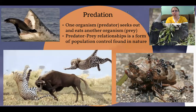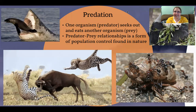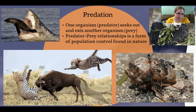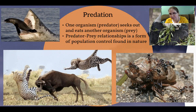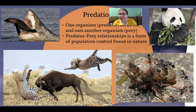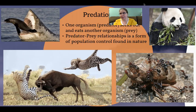Next is predation — when one organism seeks out and eats another organism. The one doing the hunting is the predator; what it eats is the prey. Here we have a great white shark preying on a seal, a leopard going after a water buffalo, ants preying on something beneath them, and a panda eating bamboo. Remember, predation means one organism seeking and eating another — the panda sought out and ate bamboo, which is an organism. Herbivores are predators to plants.